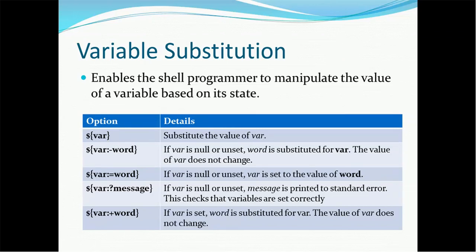So how can we substitute these variables in a given program? We have several options. If you see on the screen, on the left-hand side we have five options and on the right-hand side we have details about each option. The very first option is `${var}` — if var is null or unset, then we substitute the value of the variable.